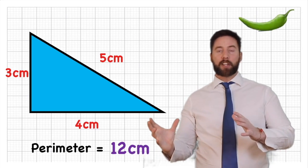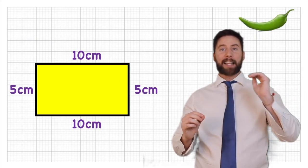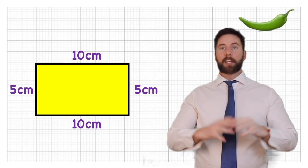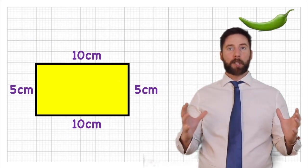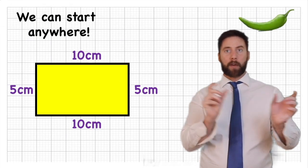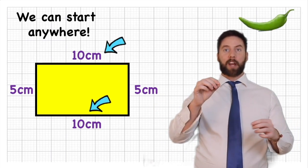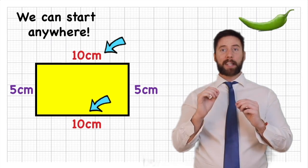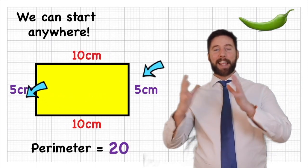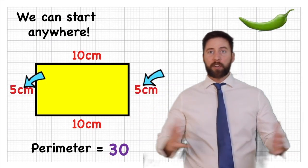Now let's look at a rectangle with sides of 5 centimetres and a top and bottom length of 10 centimetres. It doesn't matter which order we add them — addition is commutative. So I'll start with the tens: two tens gives me 20, two fives gives me 10, and 20 + 10 = 30 centimetres.